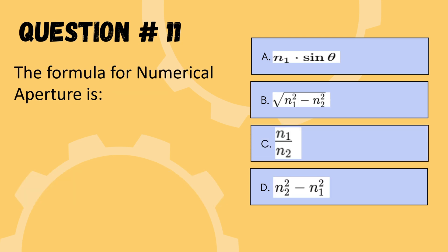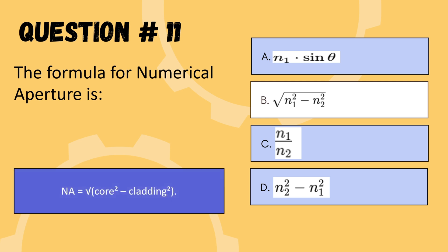Next question: the formula of numerical aperture is — options are N1 sin θ, √(N1² − N2²), N1/N2, or N2² − N1². The correct option is √(N1² − N2²).